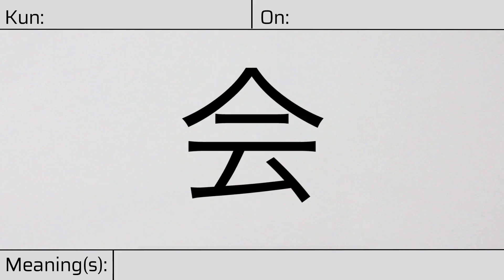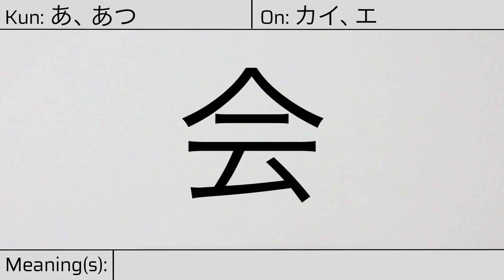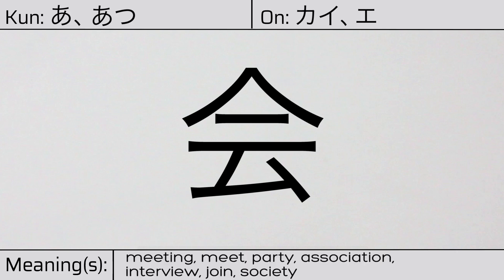Welcome to this lesson on Japanese kanji. Today, we'll be discussing this character. This kanji has kunyomi or Japanese readings of a or atu, and it has onyomi or Chinese readings of kai or e. This character has the meanings meeting, meet, party, association, interview, join, or society.